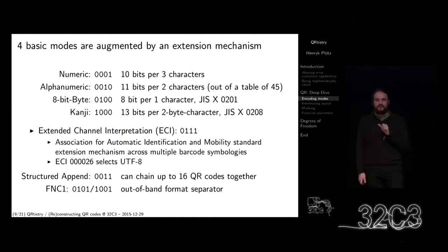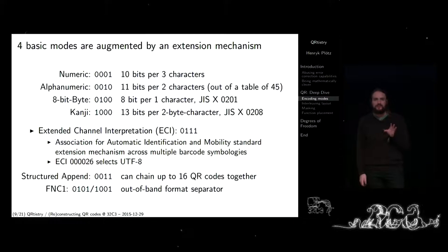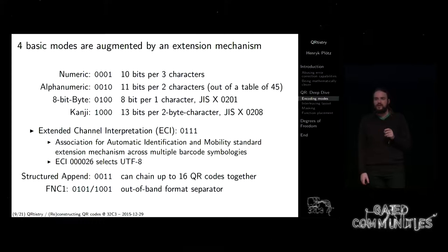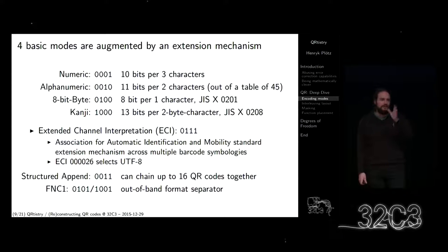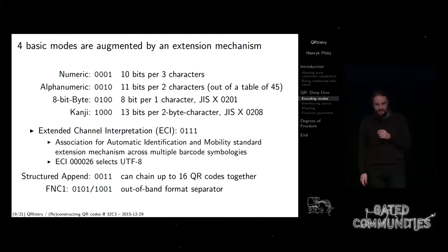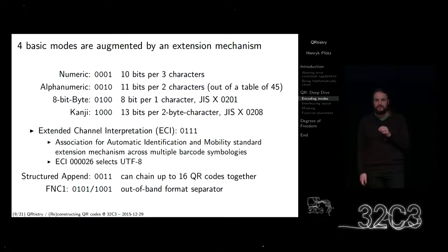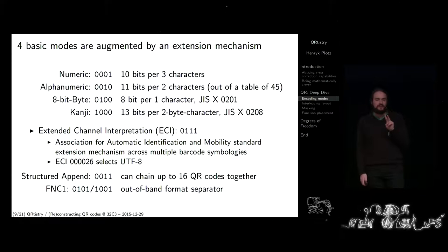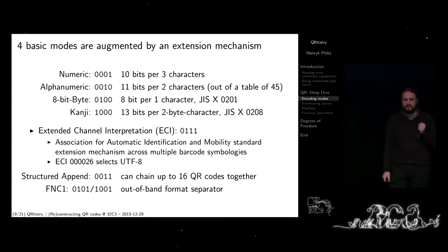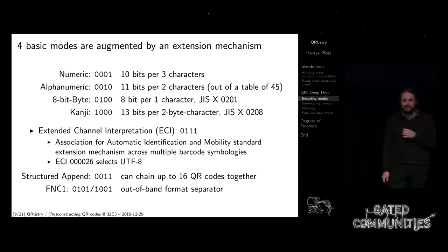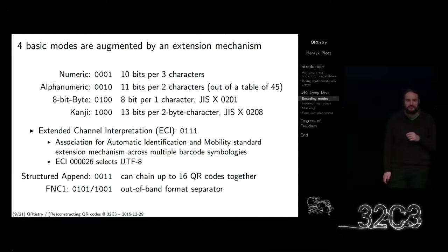The data has to be encoded. There are four basic modes. The first and most obvious — used in the original automotive application — is numeric encoding mode, where you can only encode numbers. This is done by encoding three characters into 10 bits, treating them as an integer from 0 to 1023. Alphanumeric mode uses a substitution table with 45 characters, encoding two entries into 11 bits. 8-bit bytes is just plain 8-bit bytes as you would expect. And there is a kanji mode which, according to the spec, uses 13 bits for two characters — I don't know how they are mapped, I don't speak Japanese.